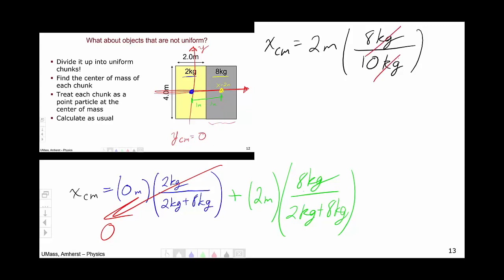The units of kilograms cancel as they should. So that gives us a center of mass of 16 meters over ten or 1.6 meters, which means that the center of mass on our picture is somewhere past the midpoint where the two slabs join, but not all the way to the center of mass of the eight kilogram slab. So our center of mass is going to be somewhere like there.